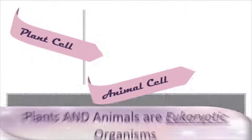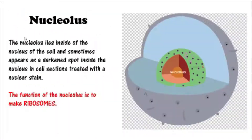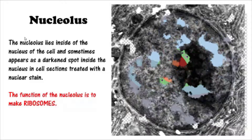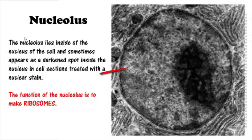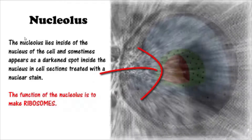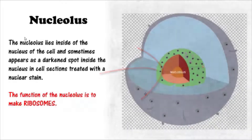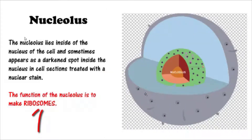The nucleolus lies inside of the nucleus of the cell, and sometimes appears as a darkened spot inside the nucleus in cell sections treated with a nuclear stain. The function of the nucleolus is to make ribosomes.